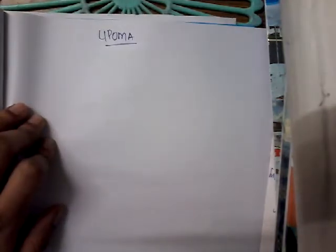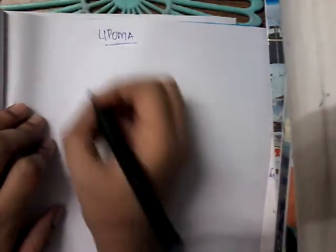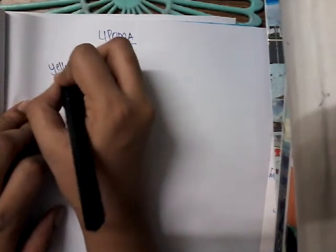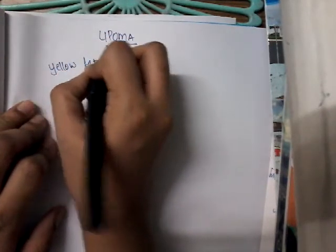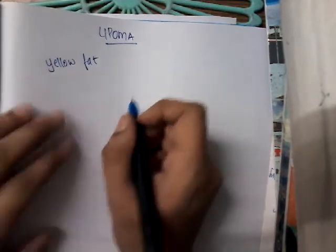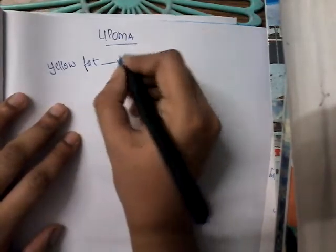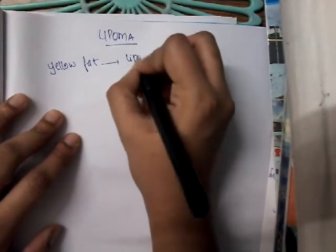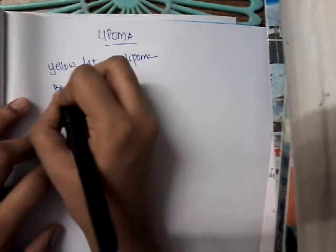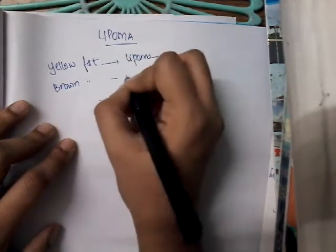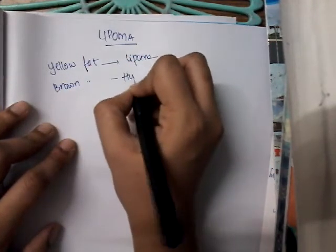Lipoma can occur anywhere. It is a benign tumor that arises from yellow fat. If the benign tumor arises from yellow fat, it is called lipoma. If it arises from brown fat, it is called hibernoma.